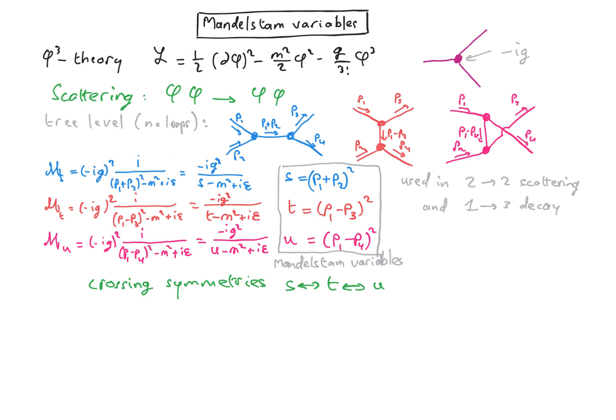In fact, the Mandelstam variables are not only used in the phi-3 theory—this is just an example—they are actually useful in many other theories like QED or QCD, etc.